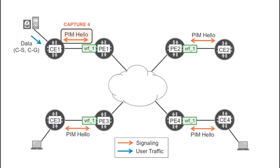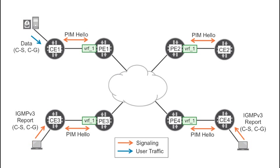Multicast receivers typically send IGMP reports to signal group membership. In this scenario, you are configuring the membership statically at the CEs. The idea is to simulate a receiver connected to the downstream interfaces of CE3 and CE4.